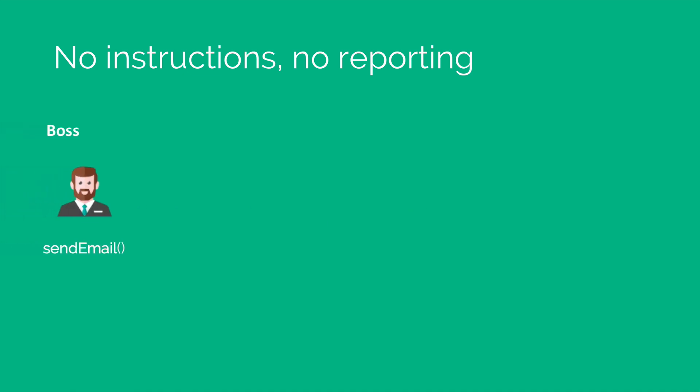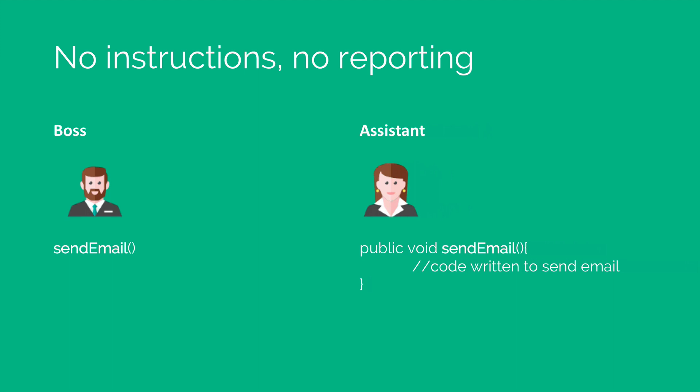The first one would be no instructions and no reporting. Let's say that we have our boss who can be the main method, and we have our assistant who is capable of sending email. All the code to send an email to somebody is written inside this public void sendEmail. The boss simply says send email and the assistant sends email. But no instructions means the boss has not specified to whom the email must be sent, what should be the subject, or what the message should be. And no reporting means the assistant has not indicated if the email was sent successfully or not.